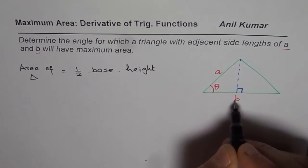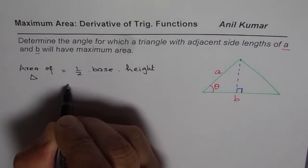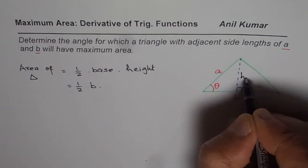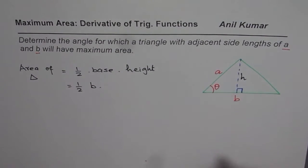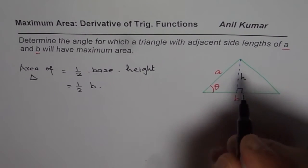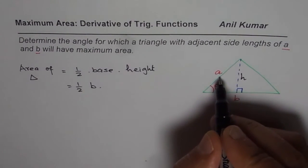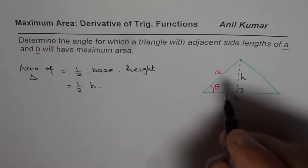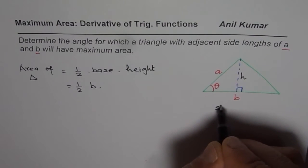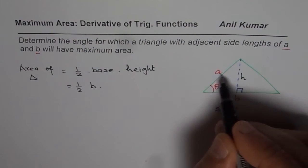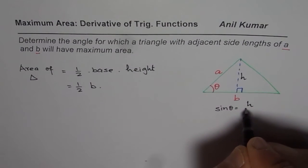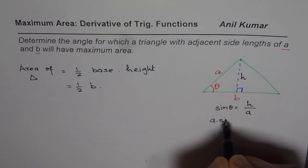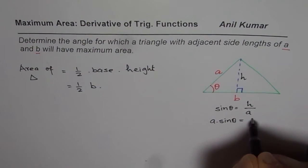In this case, the base is given to us as B, so we have half of B times height. We need to find what this height is. In this particular triangle, we have a right triangle with hypotenuse A. We can write height in terms of A. Sin theta is opposite over hypotenuse, which can be written as H over A, and from here we can write height equals A times sin theta.